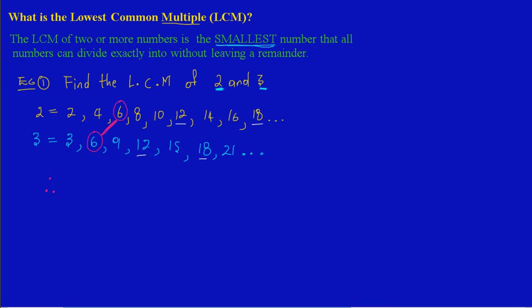Therefore, 6 is my lowest common multiple because it's the smallest number that appears in both listings.